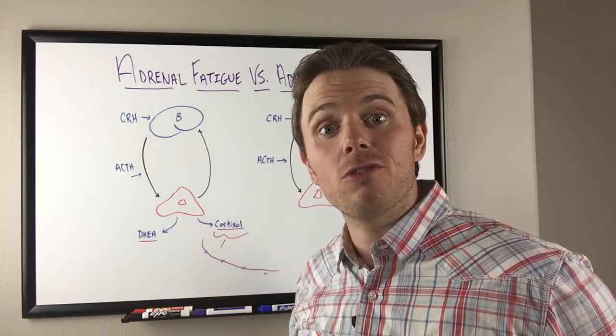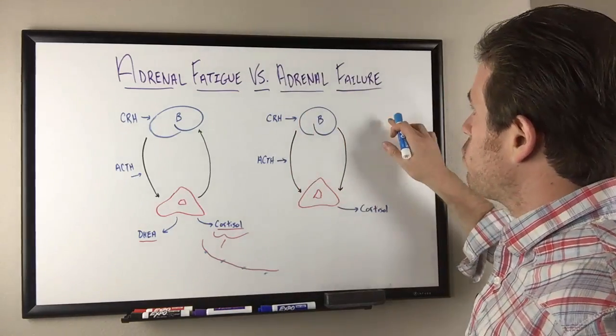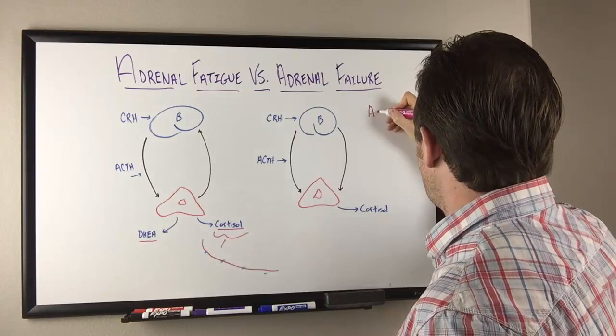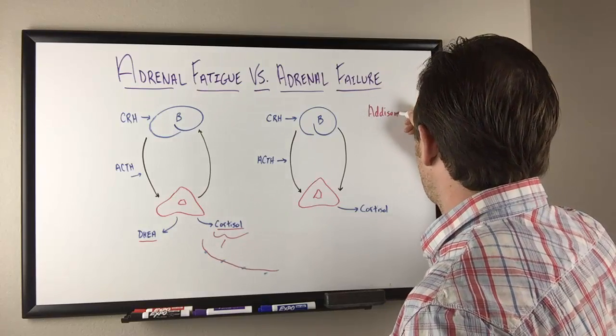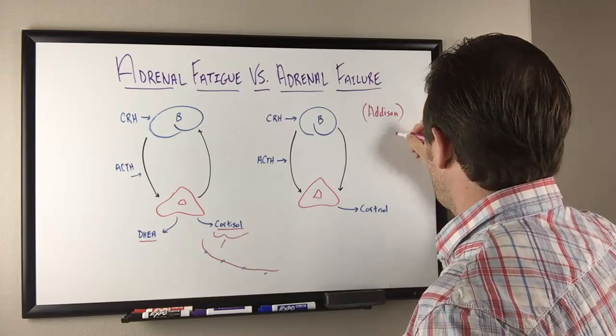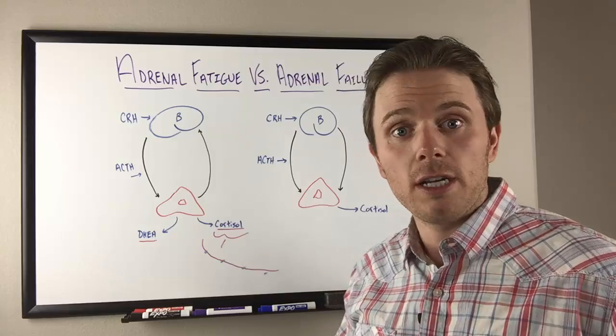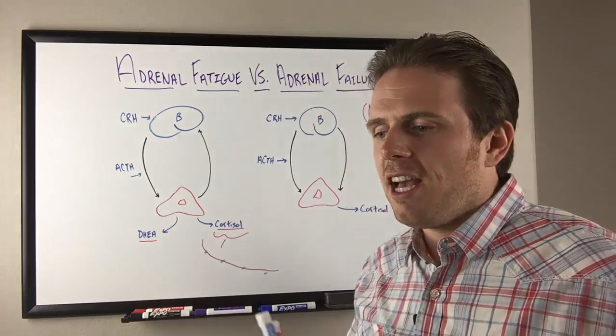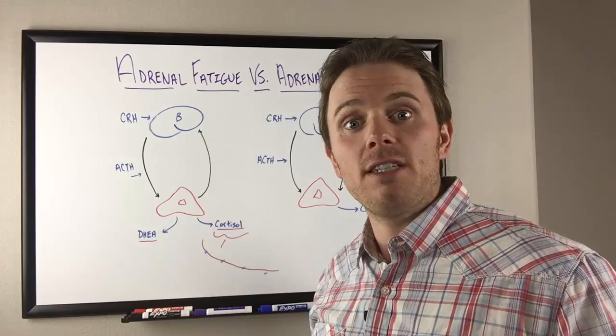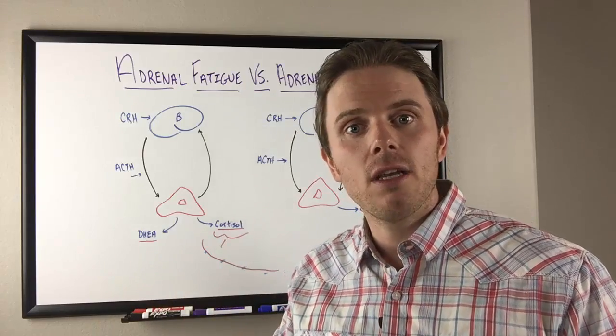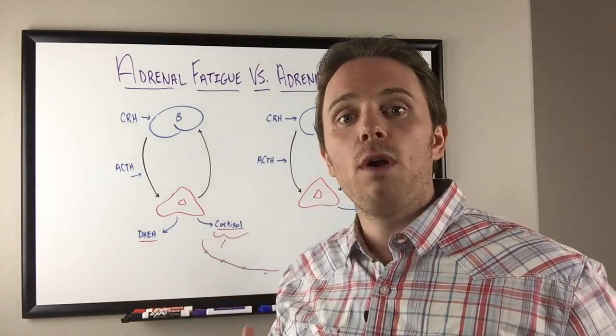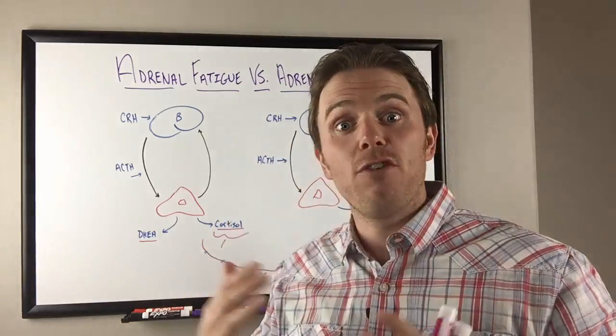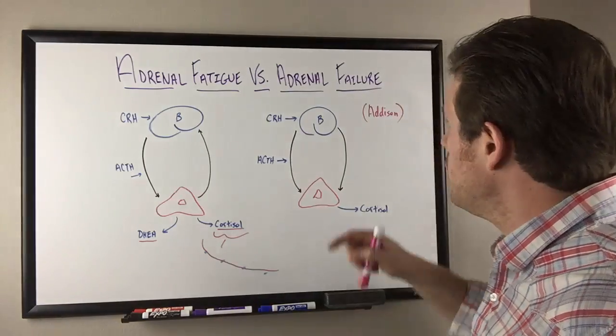Let's look at adrenal failure, otherwise known as Addison's disease. A famous person with Addison's disease is our former president JFK, John F. Kennedy. He had low cortisol functioning and if you look at pictures of him in the early 50s to when he ran for president in 1960, one of the main contributing factors of why he won the presidency is that they just came out with synthetic cortisol. Him being on synthetic cortisol allowed him to gain weight and his face actually filled in.